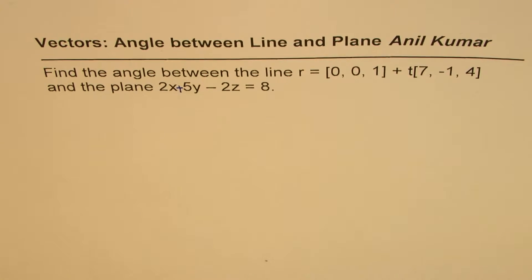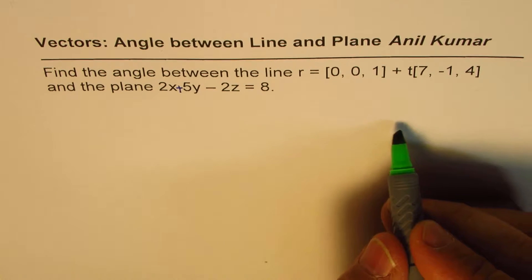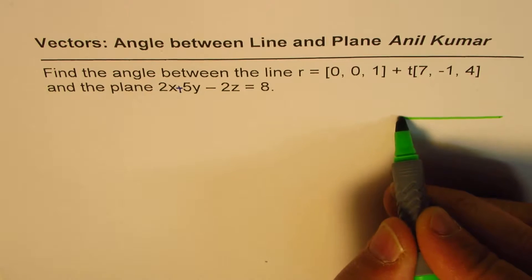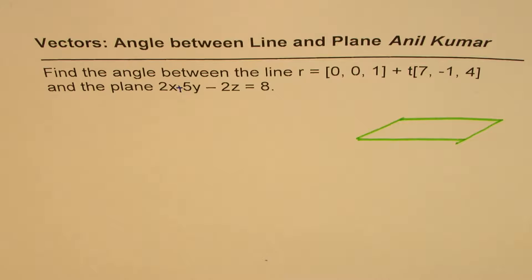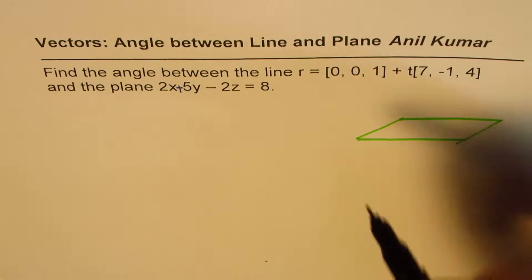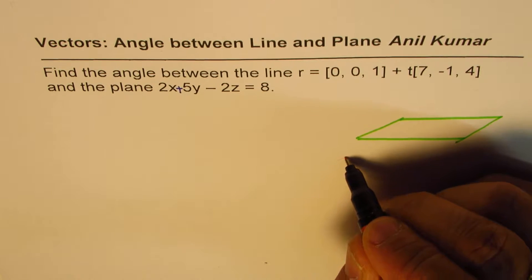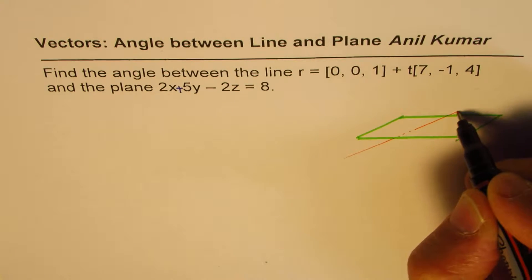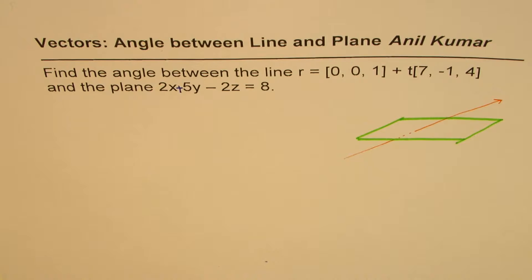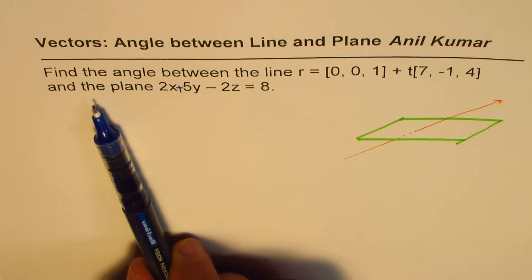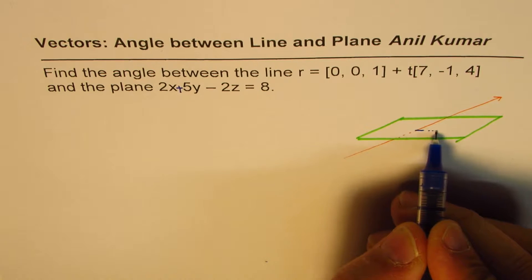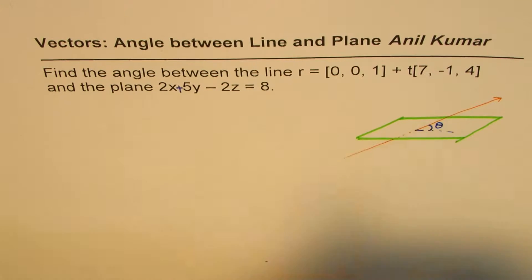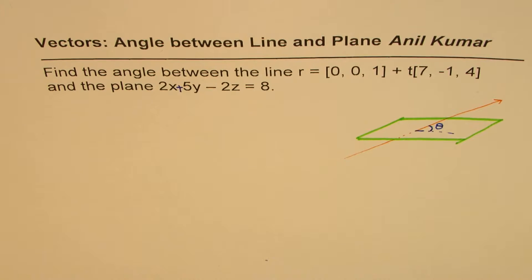So we are given a plane and a line. Let me just sketch a plane at random. Let's say this is our plane, and then we have a line going like this. We want to find the angle between the line and the plane. Clearly, the angle between the line and the plane will be this angle theta. This is what we need to find. Now, how do we find that?